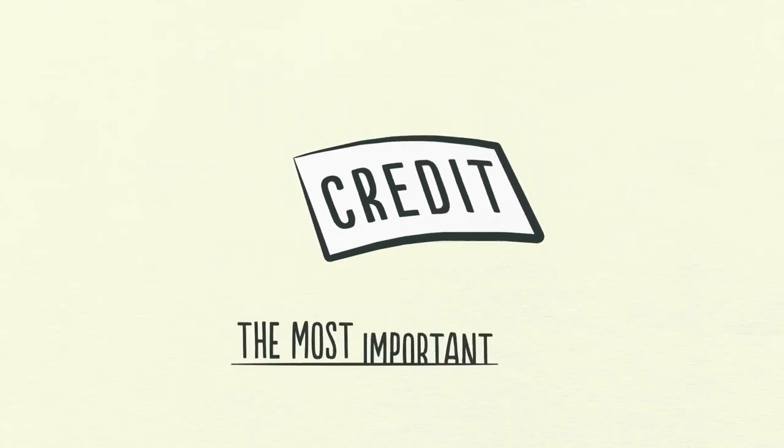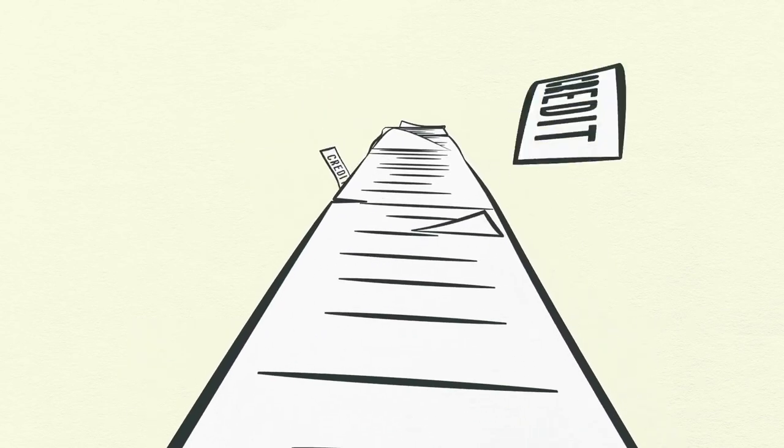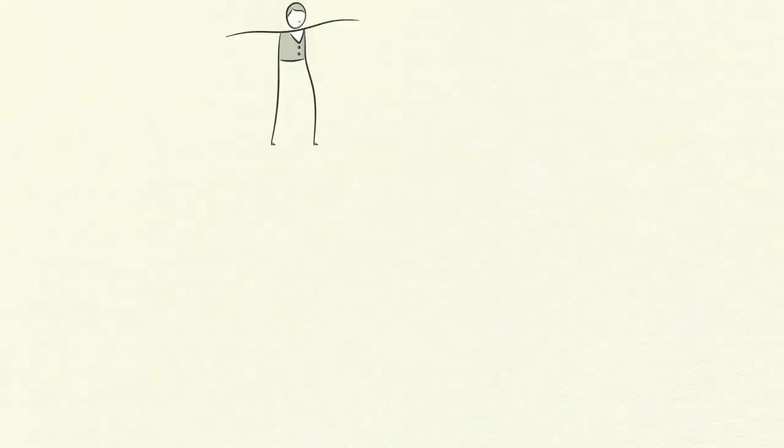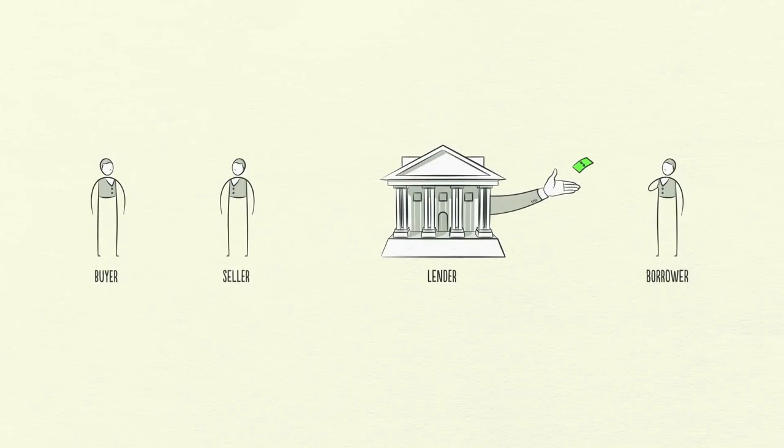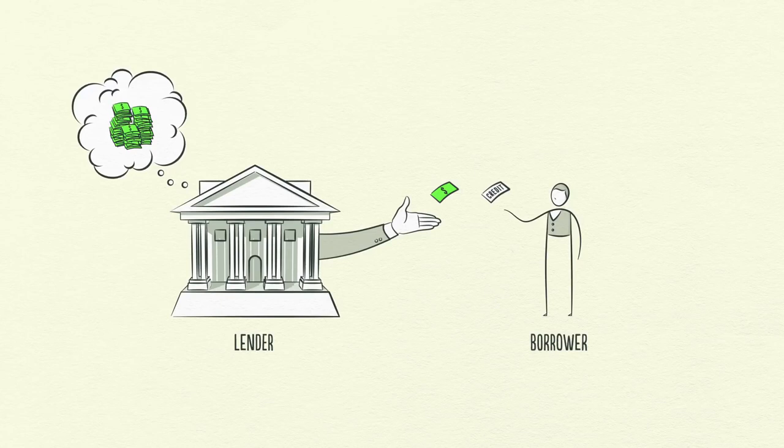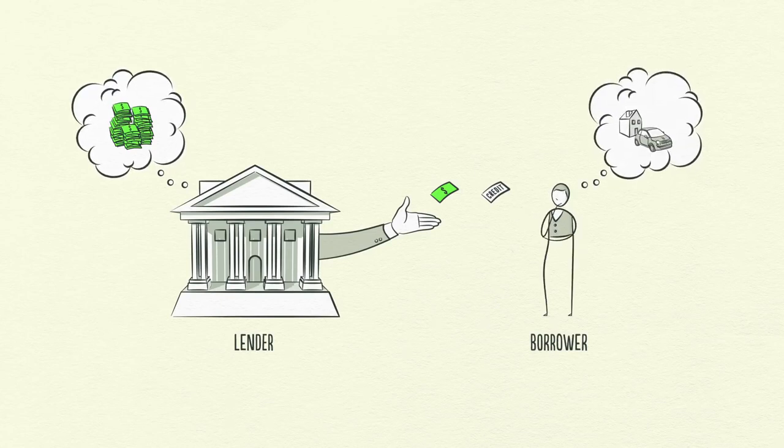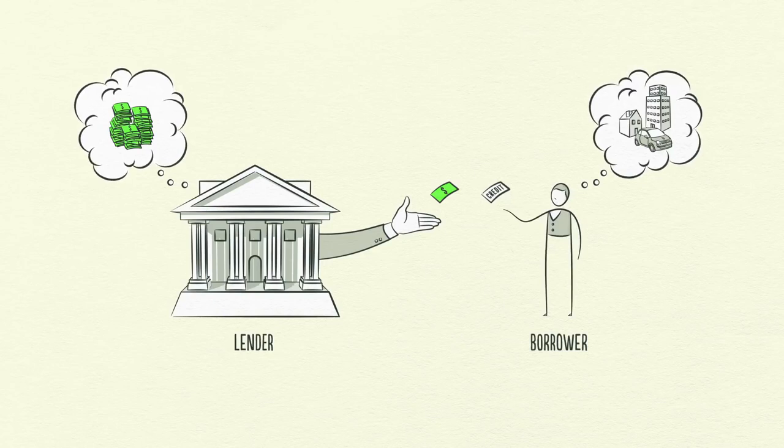I want you to pay attention to credit. Credit is the most important part of the economy and probably the least understood. It's the most important part because it's the biggest and most volatile part. Just like buyers and sellers go to the market to make transactions, so do lenders and borrowers. Lenders usually want to make their money into more money, and borrowers usually want to buy something they can't afford, like a house or a car, or they want to invest in something like starting a business.